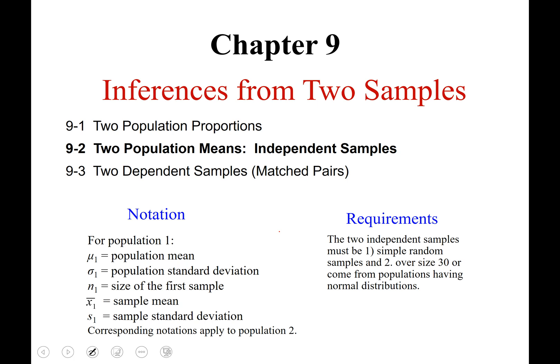On this first slide I put the notation for you. It's nothing new. You're used to μ sub one means first population, σ sub one first population, lowercase n is sample size, x bar is sample mean, lowercase s is the sample standard deviation, and if there's a corresponding sub two, then those variables will be corresponding to population number two.